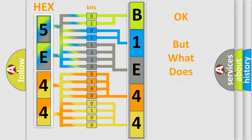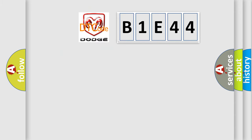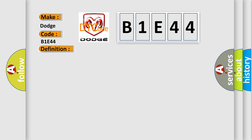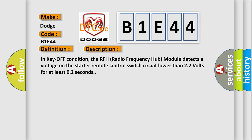We now know how the diagnostic tool translates the received information into a more comprehensible format. The number itself does not make sense if we cannot assign information about what it actually expresses. So, what does the diagnostic trouble code B1E44 interpret specifically for Dodge? The basic definition is: Starter relay circuit short to ground. The RFH radio frequency hub module detects a voltage on the starter remote control switch circuit lower than 22 volts for at least 0.2 seconds in a key-off condition.